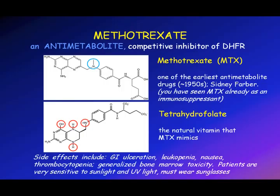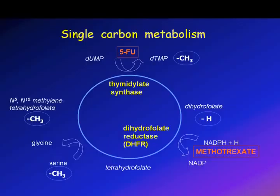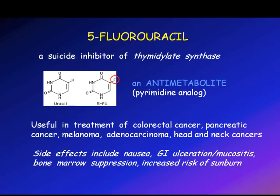Methotrexate is an antifolate that looks like tetrahydrofolate. It works on the enzyme tetrahydrofolate reductase. You need tetrahydrofolate to complete the 5,10-methylene tetrahydrofolate that then takes uracil via thymidylate synthetase to make thymidine. 5-FU also inhibits this same enzyme — it's a suicide inhibitor of thymidylate synthetase.